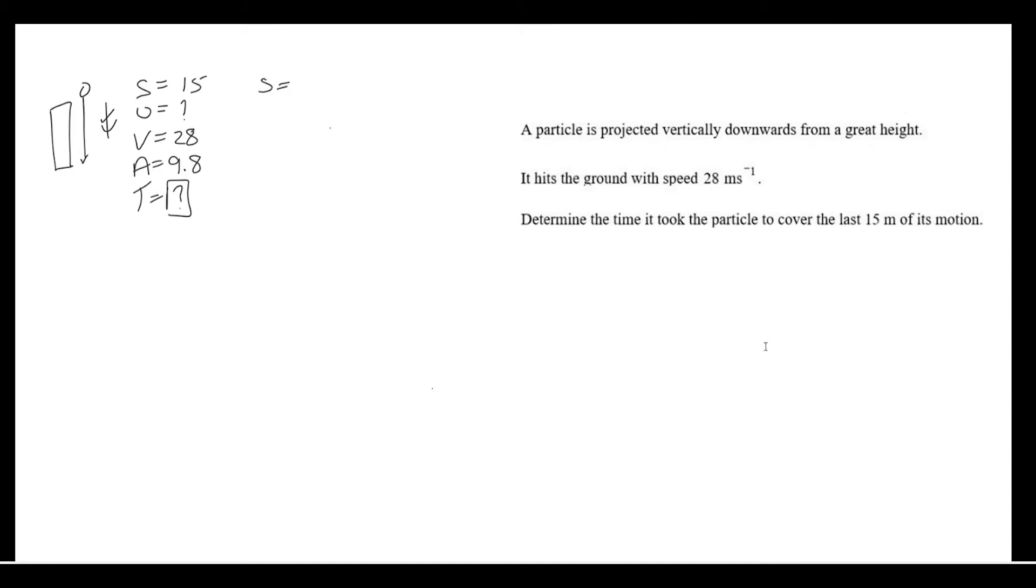The formula that helps us out here is S equals VT minus half AT squared. So, substituting in the values that we know, we generate a quadratic equation, which we can go ahead and solve. 4.9T squared minus 28T plus 15 equals 0.